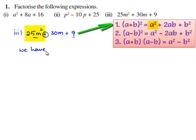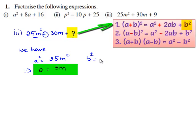we have a² = 25m², which implies a = 5m, and also b² = 9, which implies b = 3.